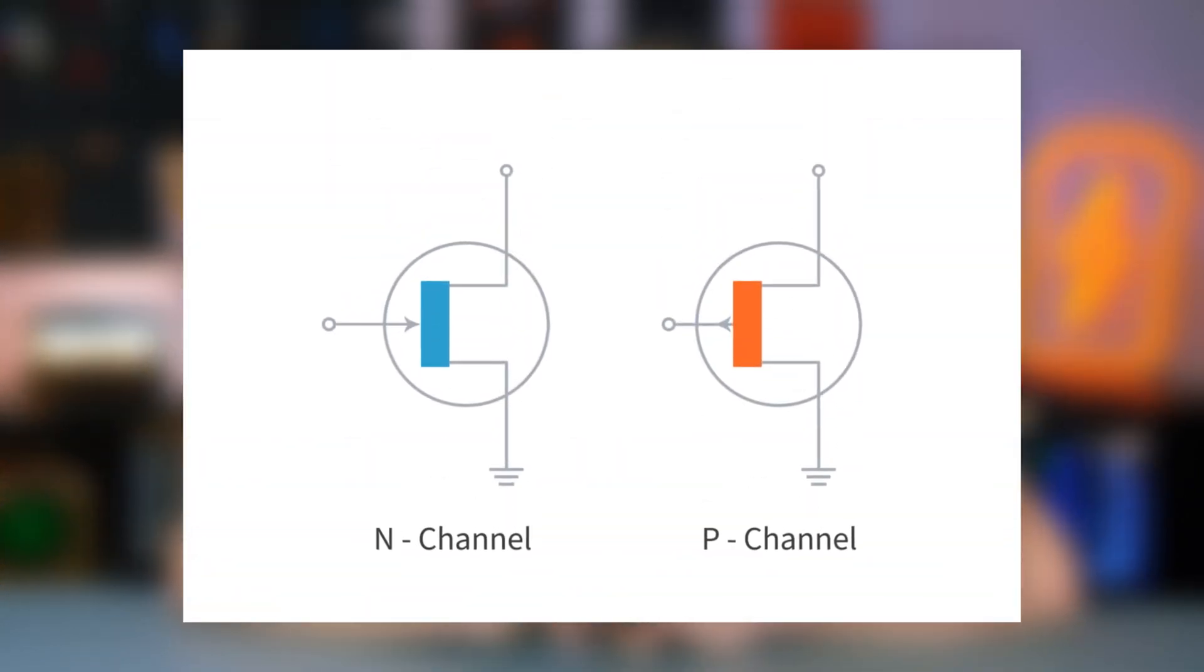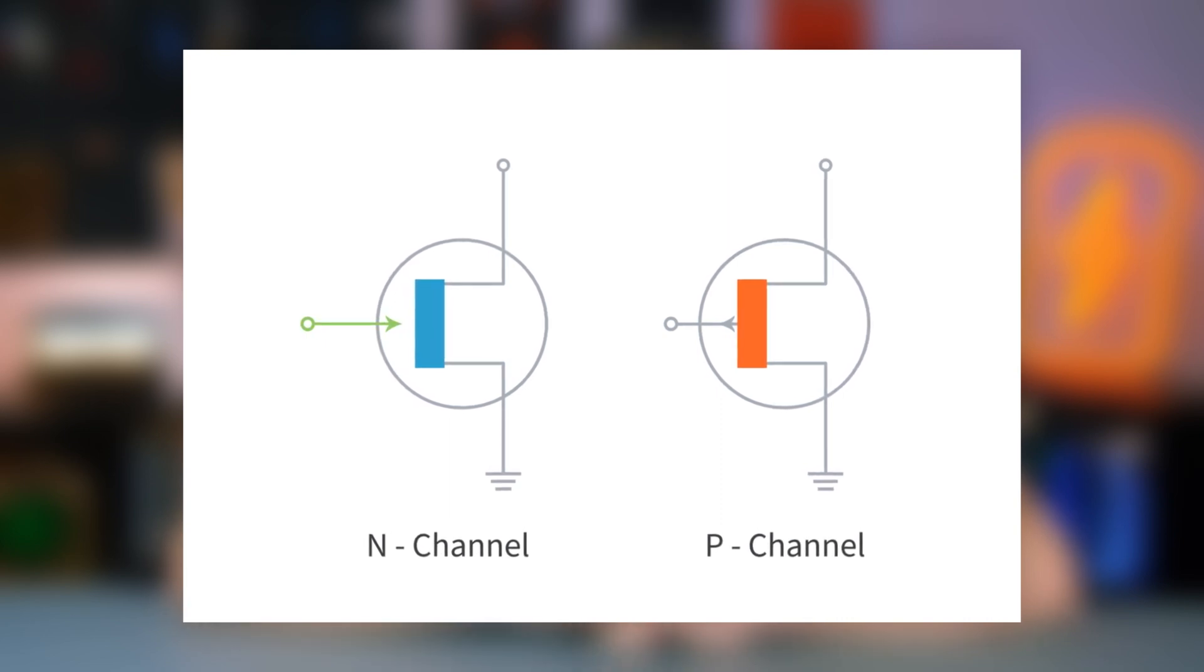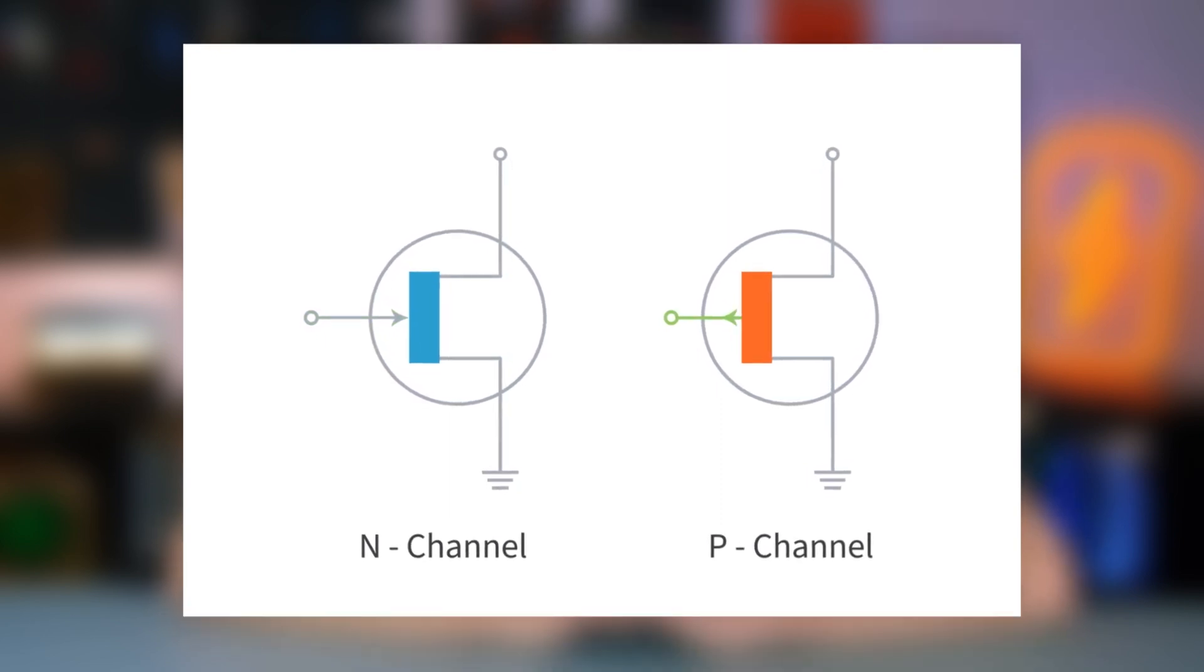To differentiate between an N channel JFET and a P channel JFET, there are two different symbols with the arrow pointing toward the gate for N channel and away from the gate for P channel. Unless you use these frequently, you may just have to be like me and check a reference every time to remind yourself which one is which, and there's absolutely no judgment here.